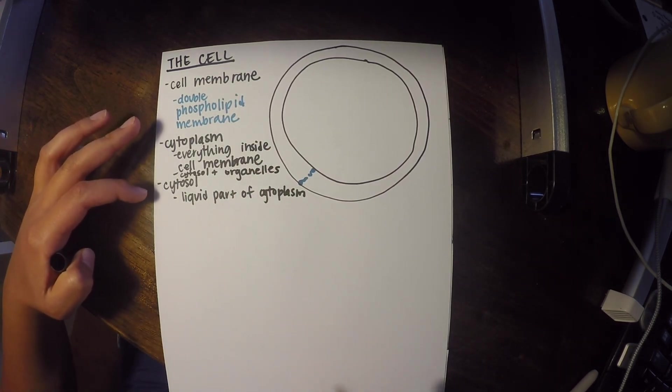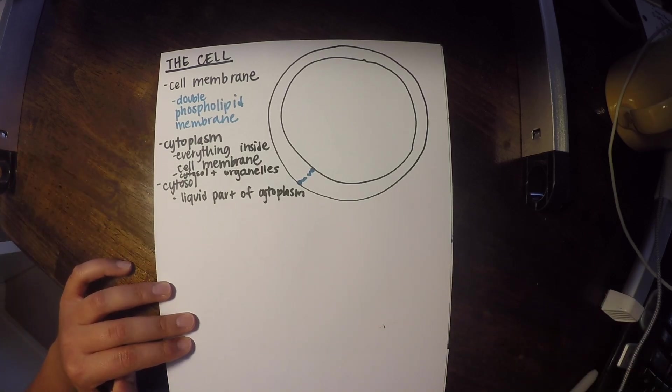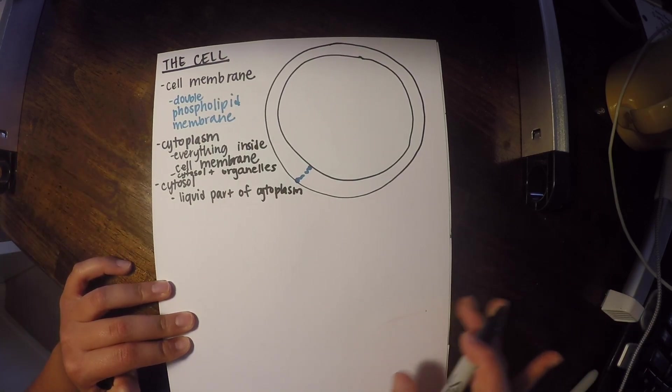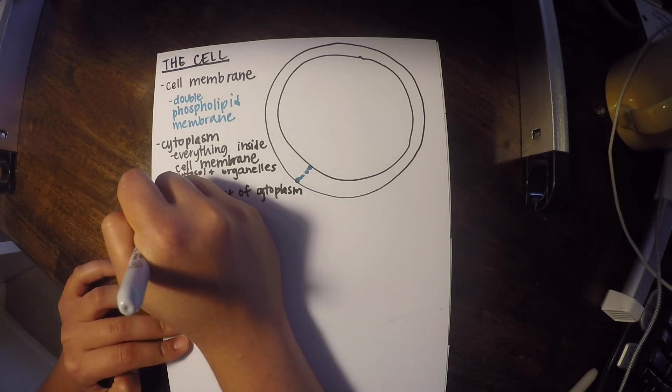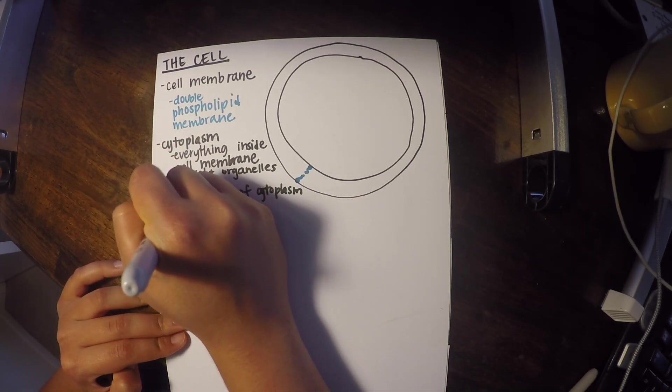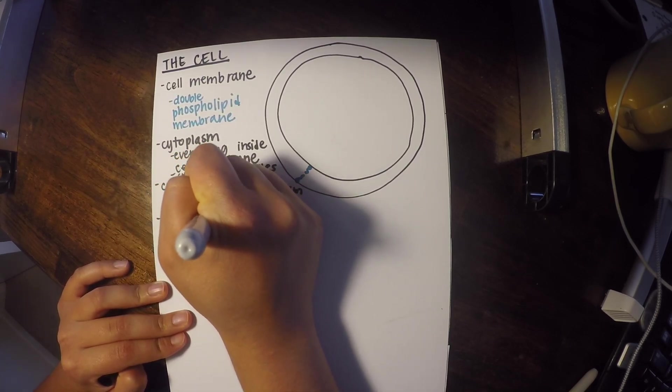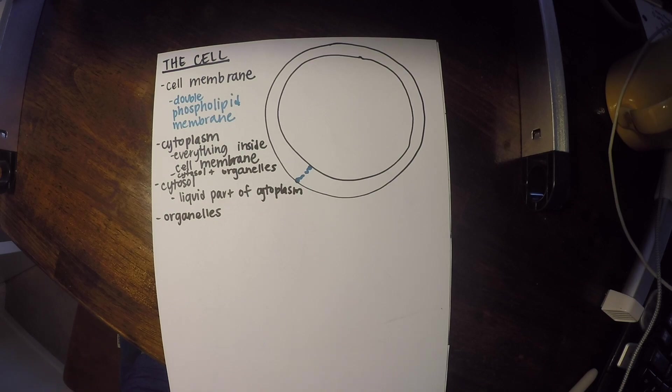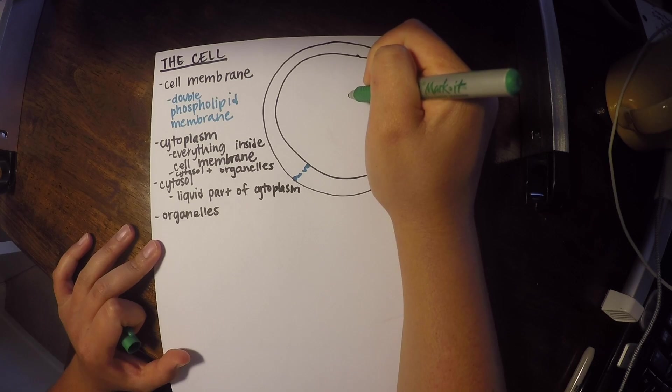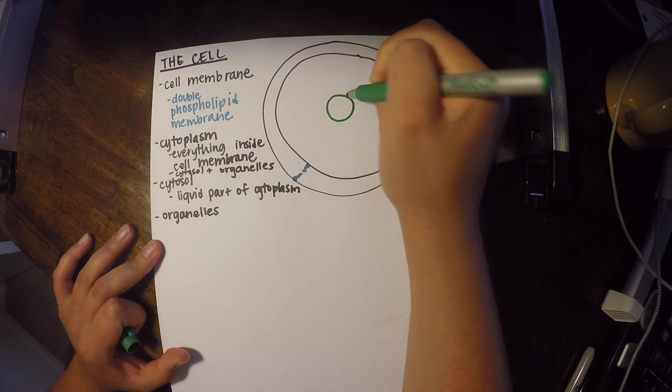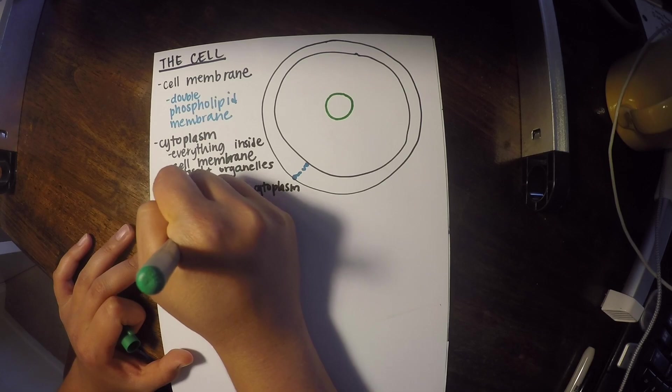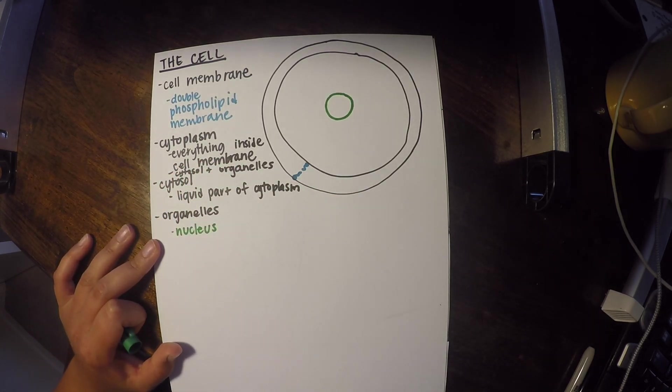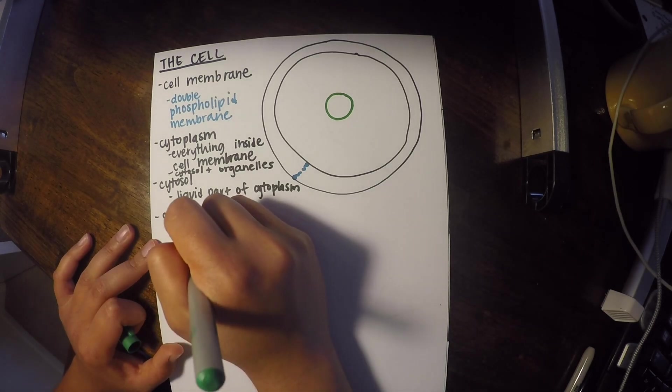So now that we have those two terms organized, I'm going to talk about the different organelles. This just means little organs. So first we have the nucleus, and that really functions as the brain of the cell and contains DNA.